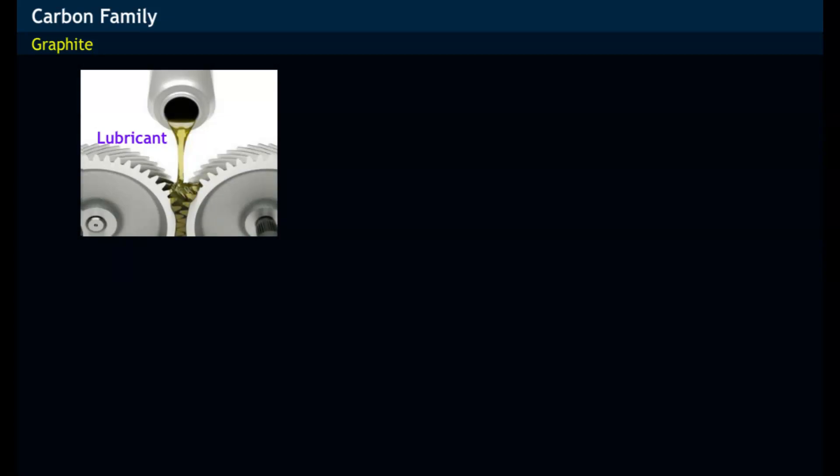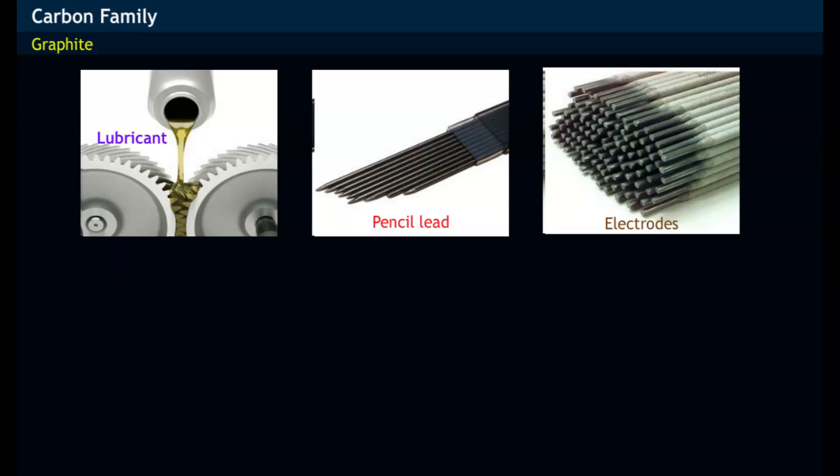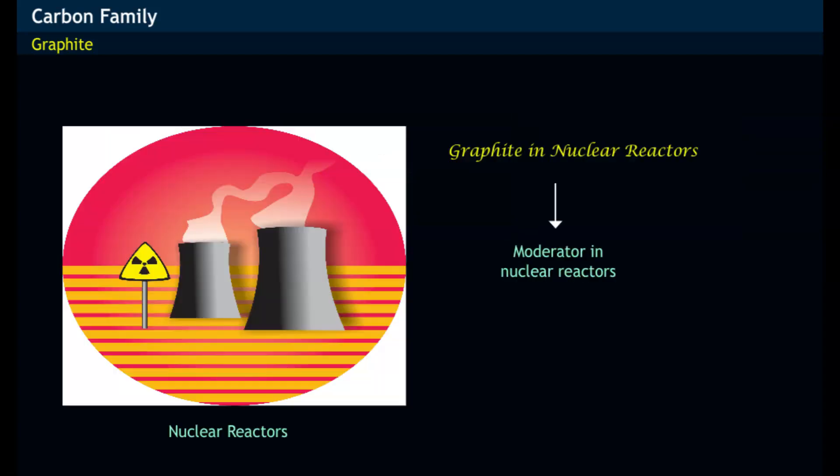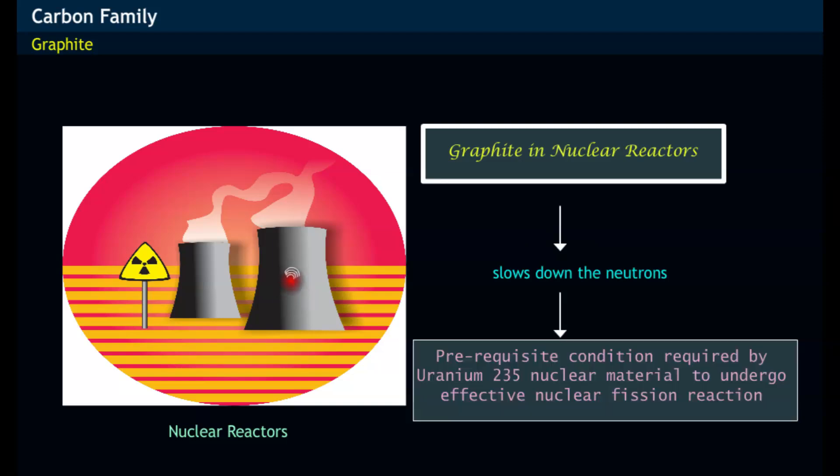Graphite is used as a lubricant, in pencil lead, and as electrodes. It also acts as a moderator in nuclear reactors where graphite slows down the speed of neutrons.